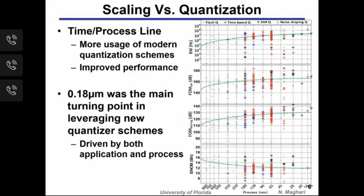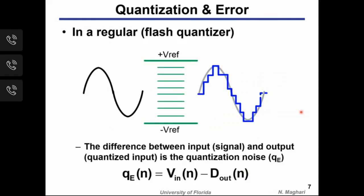Plotting quantizer type versus technology node, with axes showing bandwidth, Schreier FOM, Walden FOM, and ENOB, the data shows that before the 180nm node most quantizers were flash-based. As technology progressed, innovative quantizers such as time-based, noise-shaping, VCO-based, and SAR ADCs have emerged. This plot clearly shows the evolution of quantizer types with process scaling.